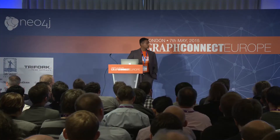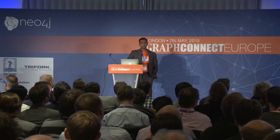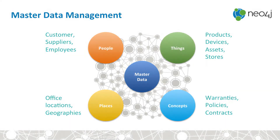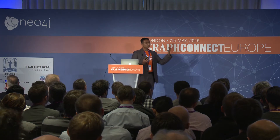The very first use case in the internal application space is managing your master data. Master data comes in all shapes and categories — people, concepts, locations, and things. Almost every organization has customers, suppliers, and employees — this is reference data. Another example on the thing side is if you are selling a product or a service, or if you are managing devices. Locations, contracts, warranties for an insurance company, and managing policies are also examples of master data.